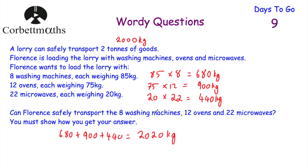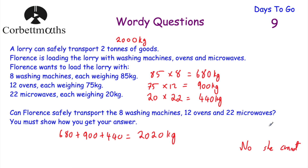We've found the total weight of the washing machines, ovens, and microwaves: 2,020 kilograms. But the lorry can only safely transport 2 tons, or 2,000 kilograms. So can Florence transport them? No, she cannot — they weigh more than what the lorry can safely carry. The answer is no. Well done if you got that.